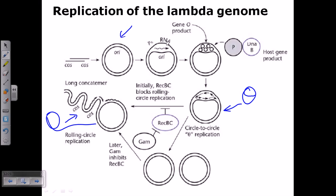it is also being translated into a product called gene O product. The gene O that is present there is responsible for helping in the theta mode of replication. The gene O product will come and it will bind to a certain region of the DNA and starts to make a kind of theta-like structure inside